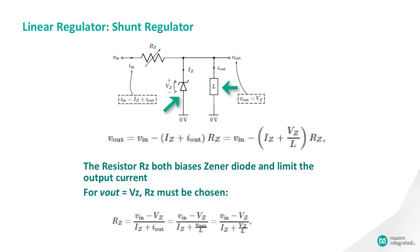Once the Rz is calculated, removing the load will allow the full load current plus the Zener current through the diode and may exceed the diode's maximum current rating, thereby damaging it.